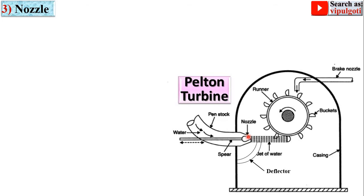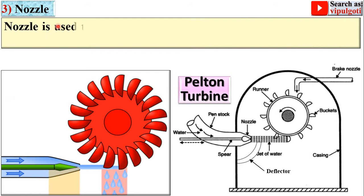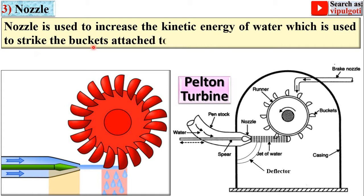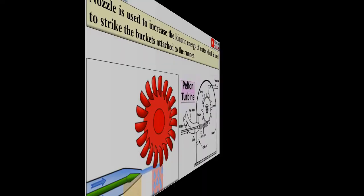Next part: the nozzle. The nozzle is used to increase the kinetic energy of water which strikes the buckets attached to the runner.